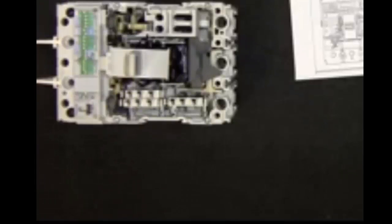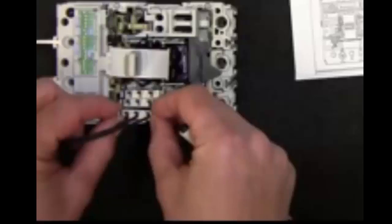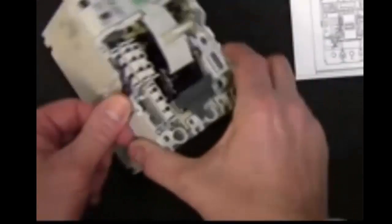Next insert the auxiliary contacts into the appropriate slot, pressing firmly to ensure full engagement. Now run the wires out to the side.